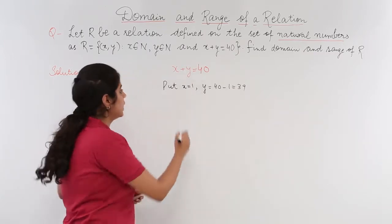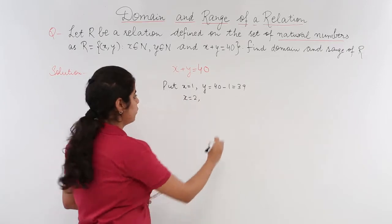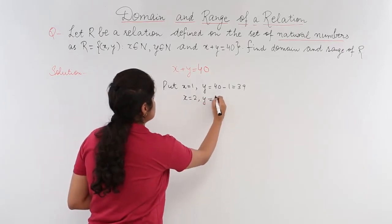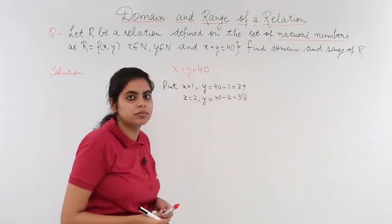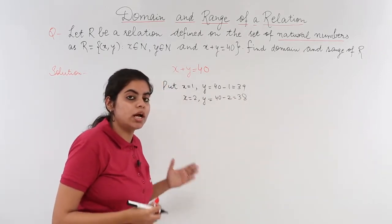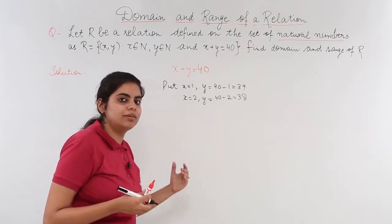Similarly, if I put x=2, what is y? y is 40-2 which is 38. And so on, I can obtain different values of y from different values of x.